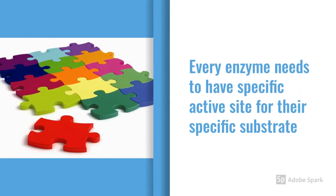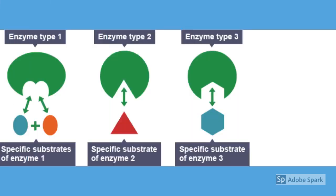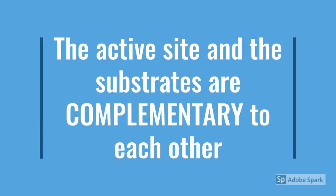This works because every enzyme has a different and specific active site to match its specific substrate — kind of like a jigsaw or a lock and key. The substrate fits into the active site of a specific enzyme only, so we don't have pepsin doing catalase's job. This picture demonstrates that perfectly: enzyme 1's active site is shaped like a circle and is the right shape for its circular-shaped substrates. We call this 'complementary' — the shape of the active site is complementary to the shape of the substrate.